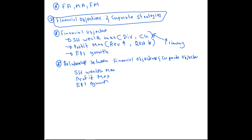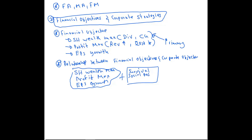When it comes to corporate objectives, it is not only shareholder wealth maximization, profit maximization, or EPS growth. Apart from these, there are other aspects a company looks for. One is survival of the company, which is very important. Another is social responsibility — this is where CSR, corporate social responsibilities, comes into the equation. So corporate objectives are not only the financial objectives.